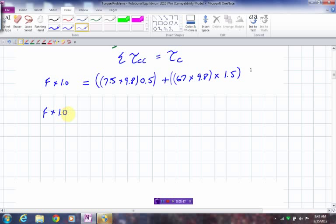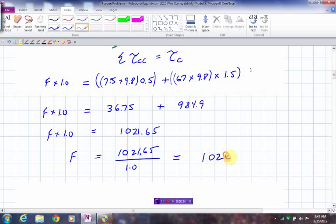So force times 1.0 is equal to, multiply all this out, you should get 36.75 newton meters. Multiply that out, you're going to get 984.9 newton meters. So this would be force times 1.0. Now, add those two together. I believe you're going to get 1021.65. That means that the force is going to be 1020.65 newtons of force. And that will be the force that keeps this in rotational equilibrium.